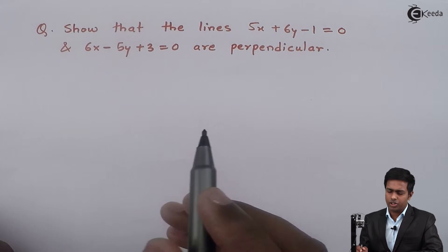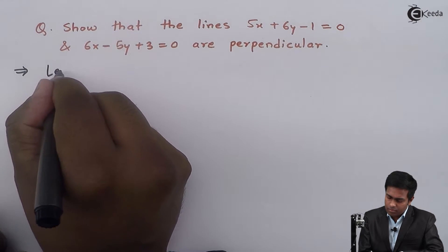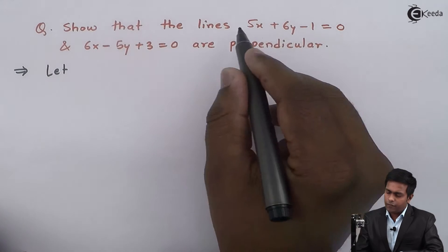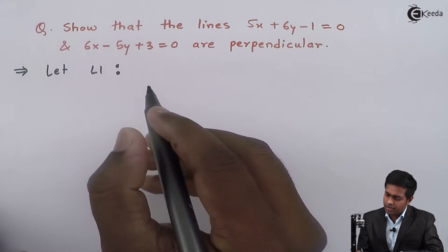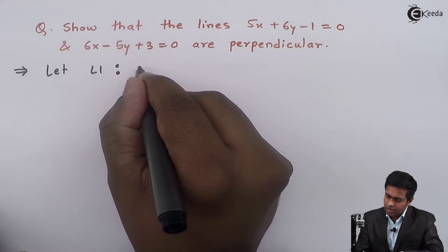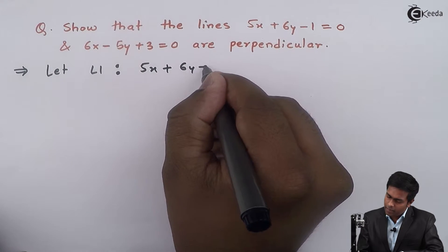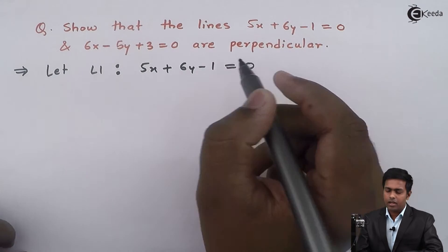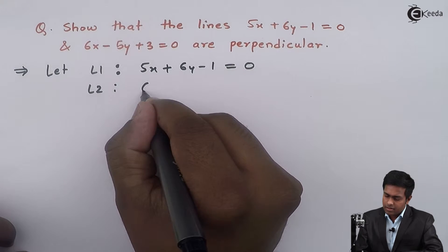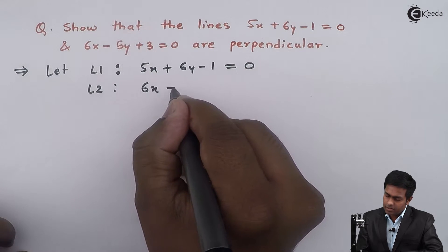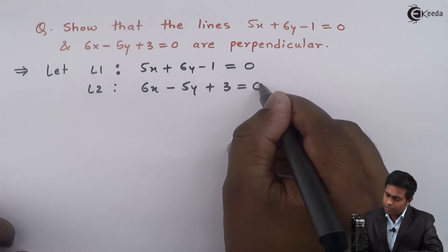Let us start with the solution. Let L1 be the first line: 5x plus 6y minus 1 equal to 0, and L2 be the second line: 6x minus 5y plus 3 equal to 0.